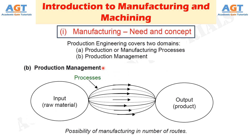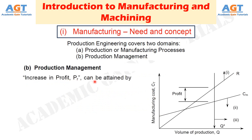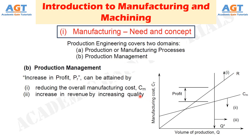It may be possible to manufacture a product of given material and desired configuration by several processes or routes, as schematically indicated in a figure. The various process routes may differ in respect of principle, technique, quality of products, time requirement and cost of manufacture, and the best one is to be selected based on some criteria. Achieving the goal in manufacturing requires fulfillment of objectives including reduction of manufacturing time, increase of productivity, reduction of manufacturing cost, and increase in profit. The most significant objective — increase in profit — can be attained by reducing overall manufacturing cost, increasing revenue, improving quality and reliability of products, and enhancement of saleable production. Production management integrates and accomplishes all such essential activities leading to maximum benefits by best utilization of resources and strategies.